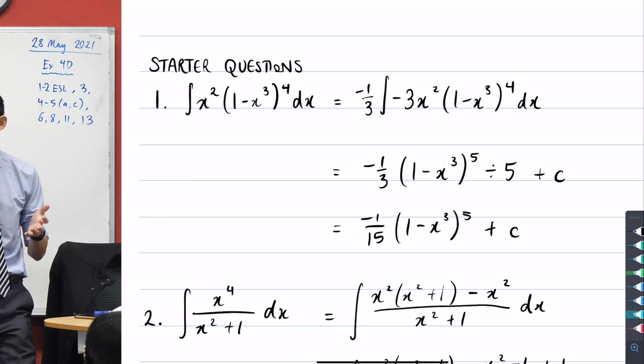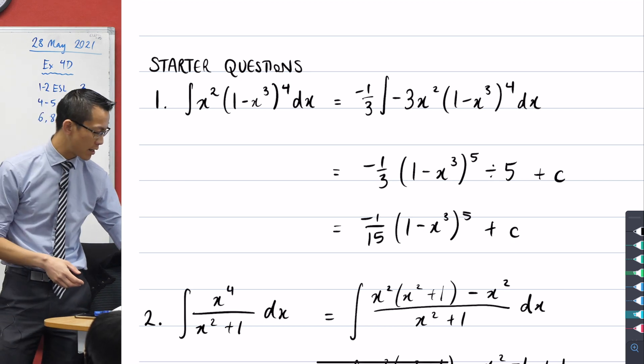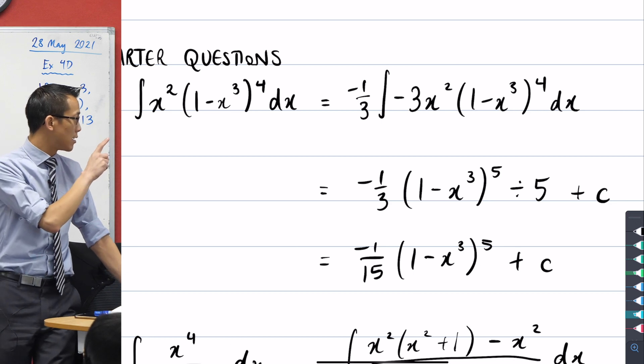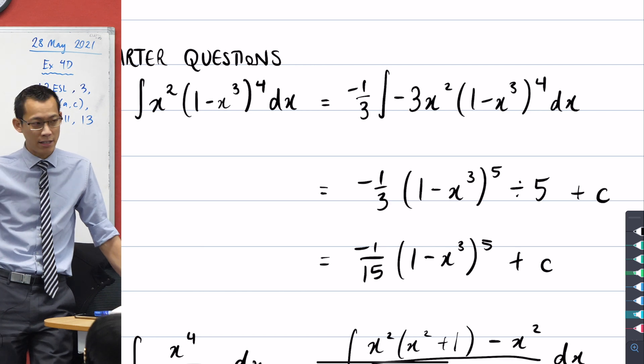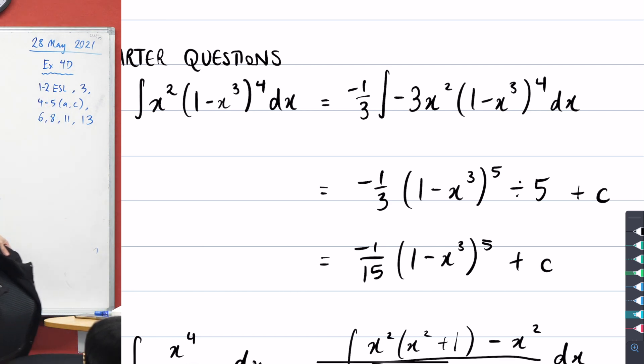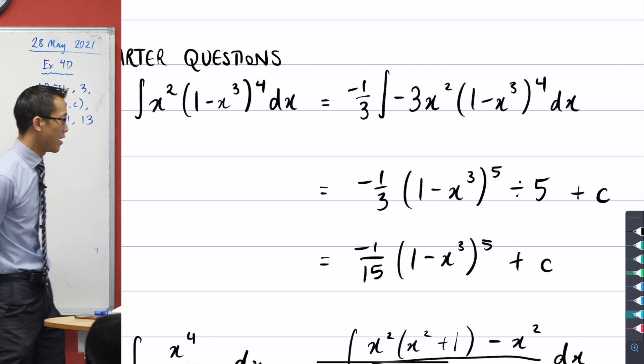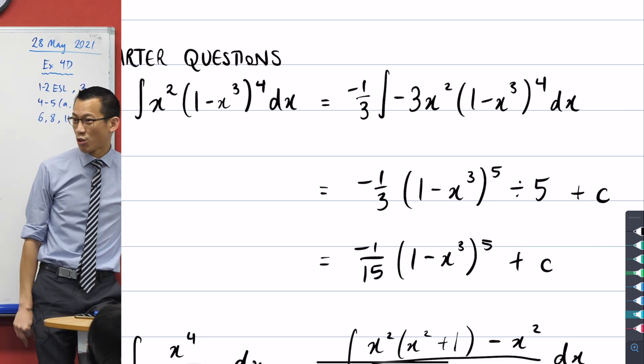One minus x cubed, you can see it doesn't take much twisting and turning to get the derivative of one minus x cubed within the integrand. It's just the classic old stick in an appropriate constant coefficient. I've chosen negative three just to go all the way there and then off you go. Does that look okay to you?